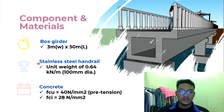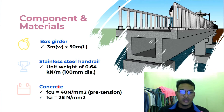We use a stainless steel handrail with a unit weight of 0.64 kN per meter and a diameter of 100mm. For the concrete, Grade C40, we use FCU of 40 N/mm² for the pretension. And FCI is 28 N/mm² at the 7-day transfer.